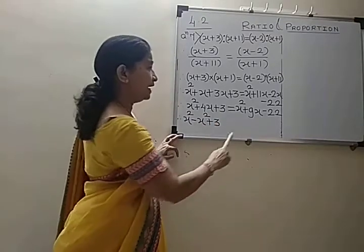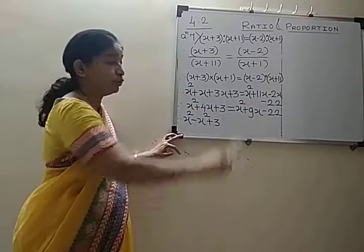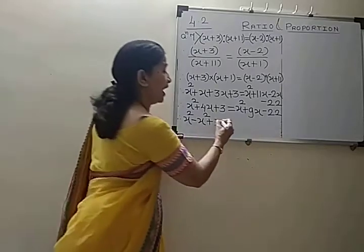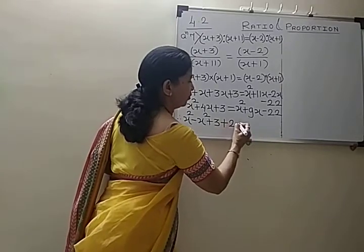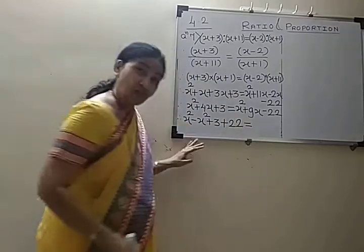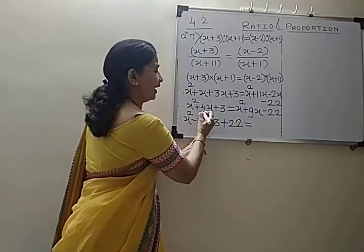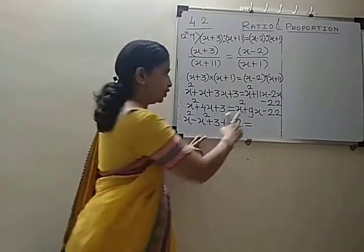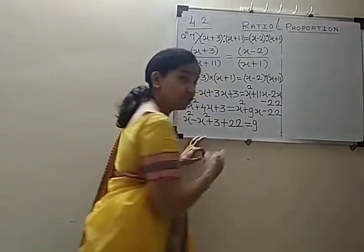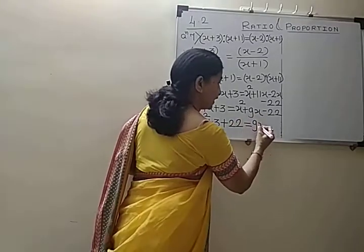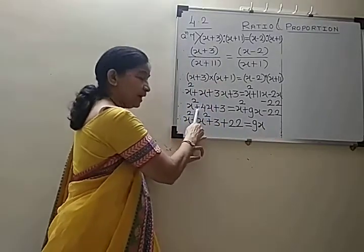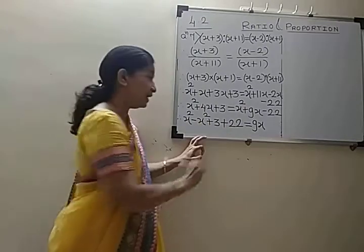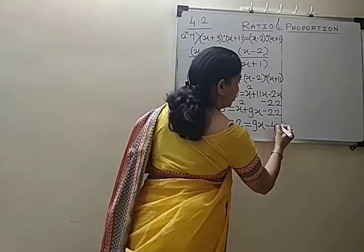And bring this minus 22 to this side — minus 22 will come as plus 22. Now see: 4x is remaining on the left. The 9x is on the right side as it is. And I send this plus 4x to that side, so plus 4x will become minus 4x.